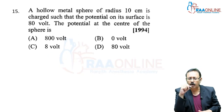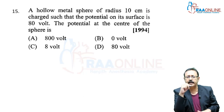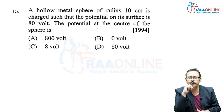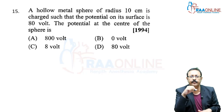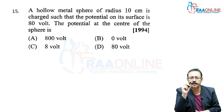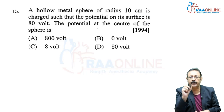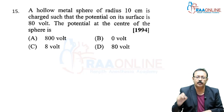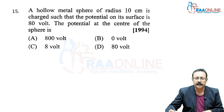15th problem, from 1994 AIPMT: a hollow metal sphere of radius 10 cm is charged such that the potential on its surface is 80 volt. What is the potential at the center? The potential inside a conductor is the same at every point and equals the surface potential. The center is an inside point, so the potential is again 80 volt. Answer is option D.